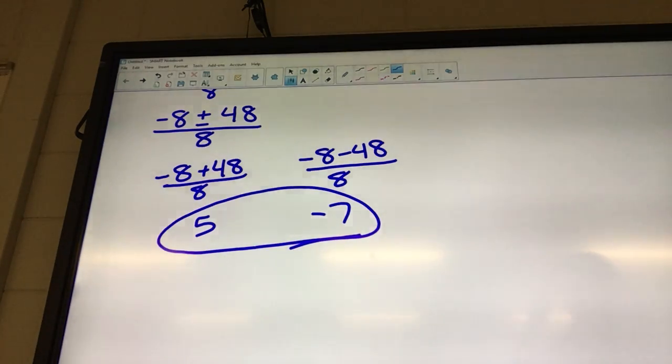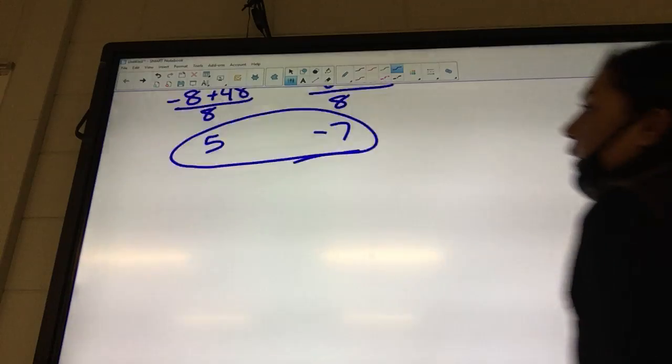Wait, what did we do to get 5 and negative 7? Type in the fraction in your calculator. That's what I did and I got another one. Reese, you didn't do something.